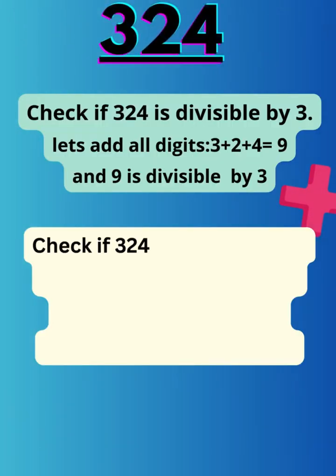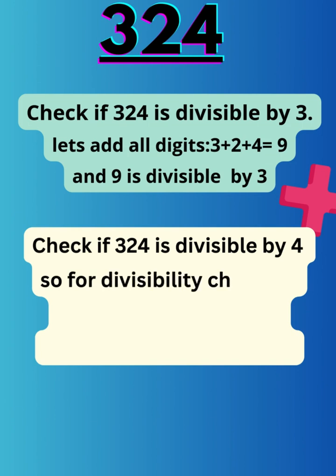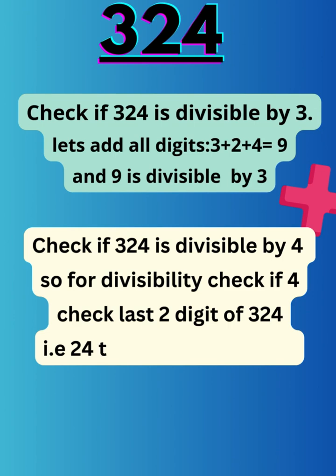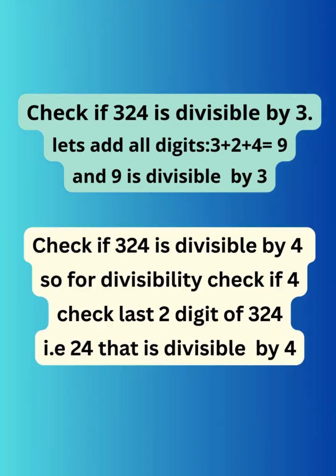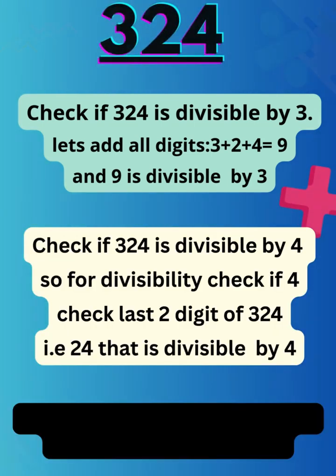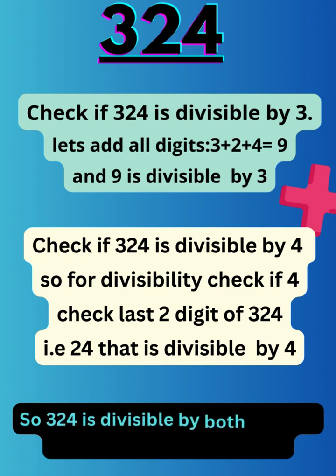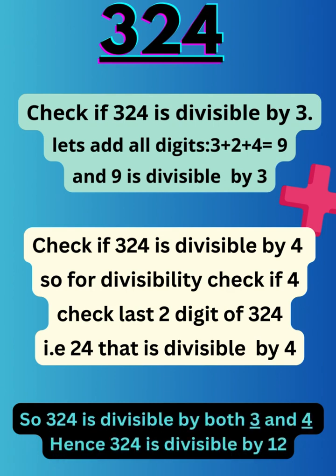Now check the divisibility of 324 by 4. Check the last two digits of 324, that is 24. And 24 is a multiple of 4, so it is divisible by 4. So 324 is divisible by both 3 and 4, so it is divisible by 12.